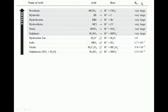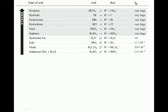Zooming in on these strong acids, we can see they have a Ka value. For the strong acids, the Ka value just says 'very large.' For the weak acids, they have an actual number. Let's look at why strong acids say very large while weak acids give an actual number.